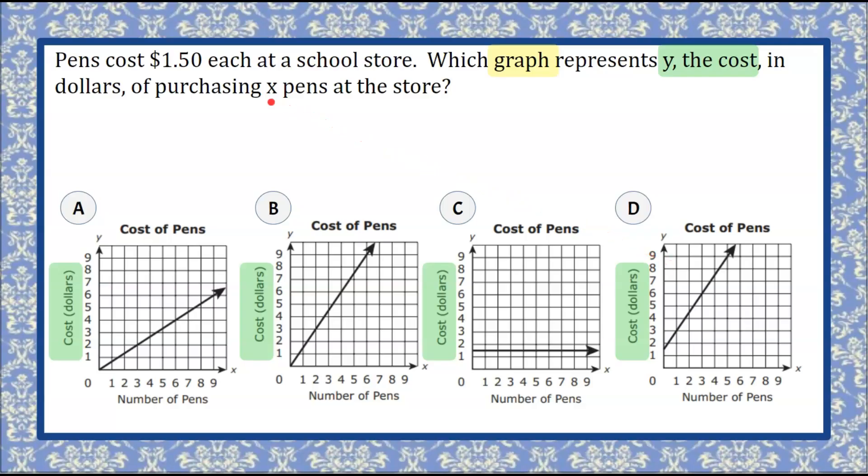We're also told that X represents how many pens we purchased at the store. Here's our X-axis, and we can see that each graph is labeled number of pens purchased. When we look at the graph, we can know the number of pens we purchased, go up to the line, and that needs to represent our cost in dollars.